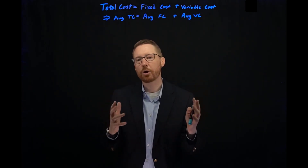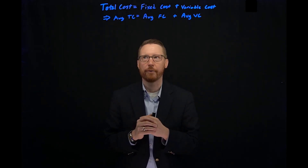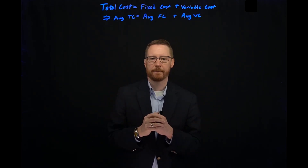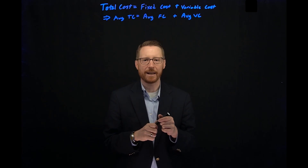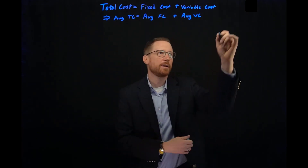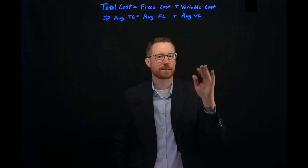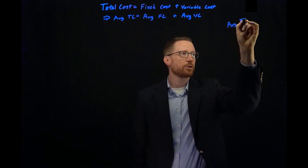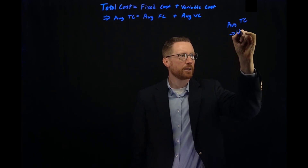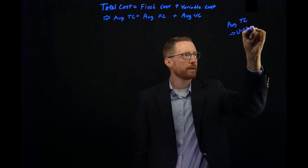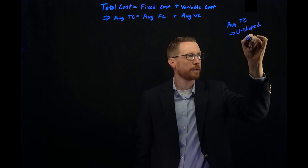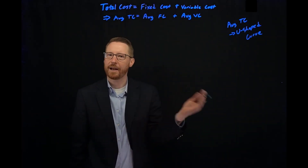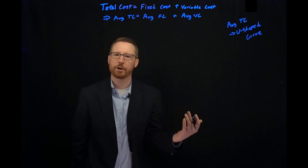So what does this look like when we graph it out? Average total cost turns out to be a U-shaped function. Let's put a quick note up here — this is where we're going, let's give our punchline away. Average total cost is a U-shaped curve. That's our punchline. How the heck do we end up with this U-shaped curve though? Let's take a look and see if we can make sense of it.